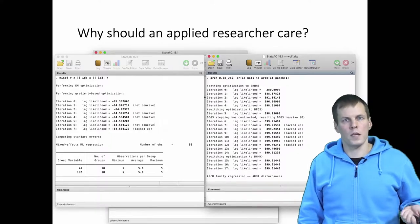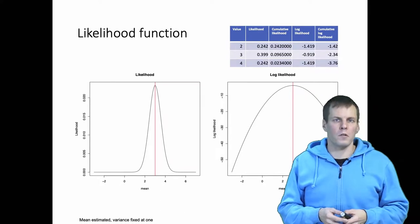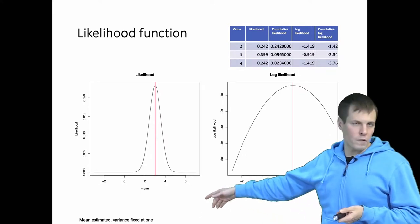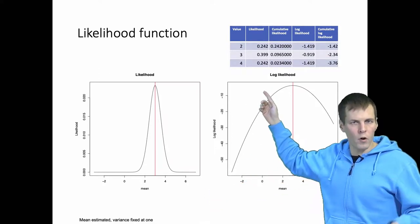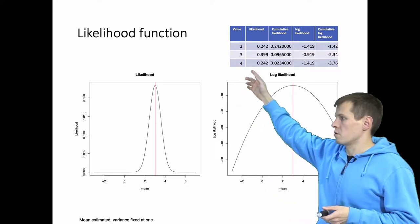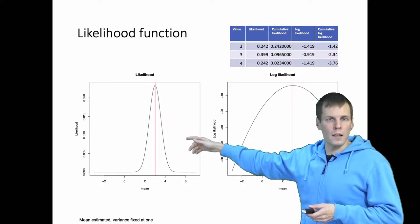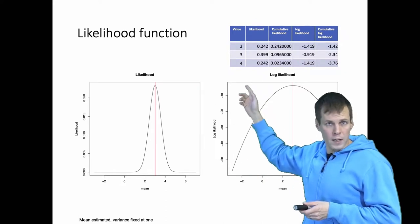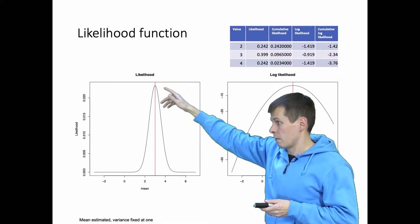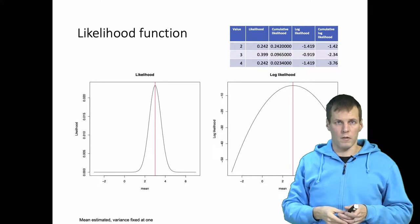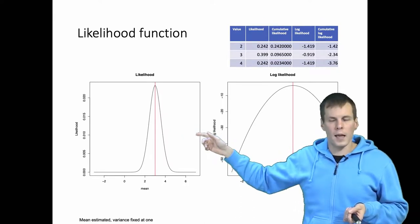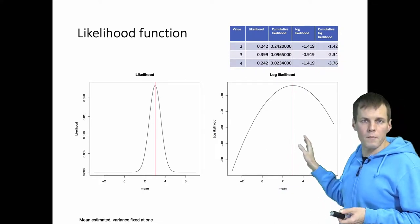What does numerical optimization do and what is actually being maximized? Consider a likelihood function for estimating the population mean, assuming population variance is 1, with a sample of three observations: 2, 3, and 4. Our task is to find the population mean with maximum probability of producing these observations. The likelihood function gives the likelihood at each candidate mean value, and the maximum is at 3 — so 3 is our maximum likelihood estimate. In practice, for computational reasons, we maximize the log-likelihood rather than the likelihood itself.